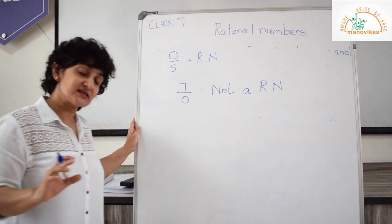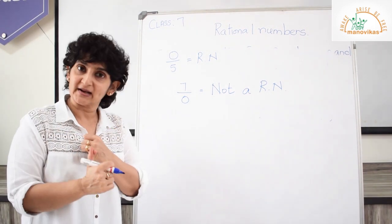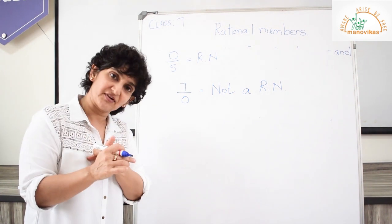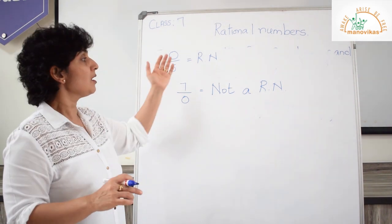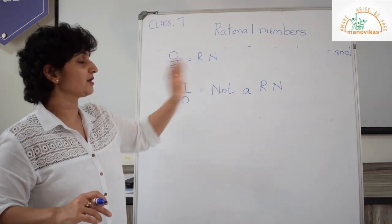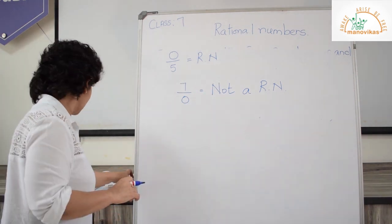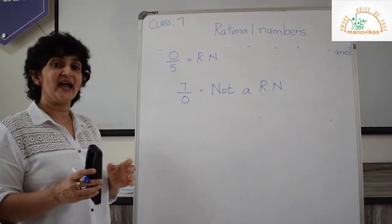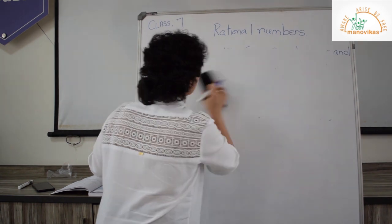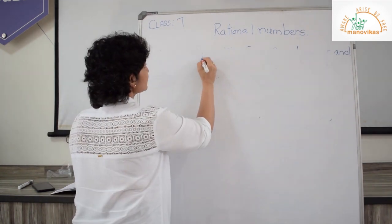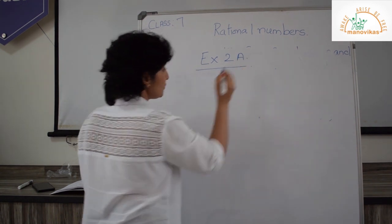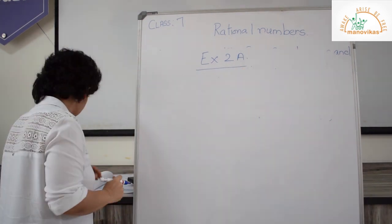So with this, I am sure you have understood what rational numbers are — negative rational numbers, positive rational numbers, and which are not rational numbers. Next, I will move on to Exercise 2a from your textbook. I will work out a few sums.